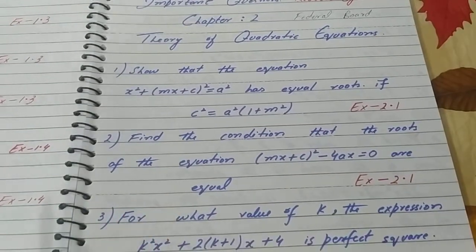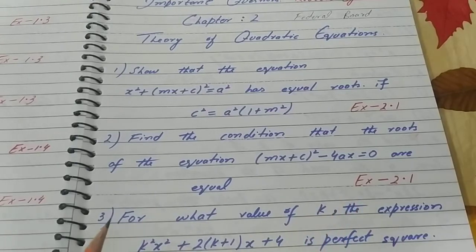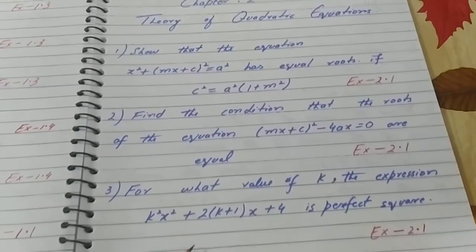Question number 2: Find the condition that the roots of the equation (mx + c)² - 4x = 0 are equal. This is also Exercise 2.1.